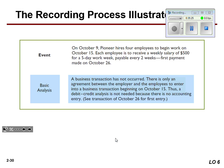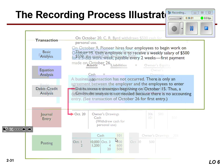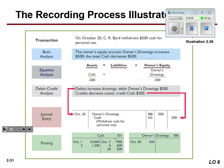On October 9th, Pioneer hires four employees to begin work on October 15th. We are not journalizing anything here — we hired them but aren't paying them until the 15th, so there's no transaction to record yet. That would be different on October 15th when we actually pay them. Then, C.R. Bird withdraws $500 cash for personal use. Cash went down — credit — and the other half is a debit to owner's drawing, which makes owner's equity go down. We'd journalize it, post it, and bring the reference numbers back.